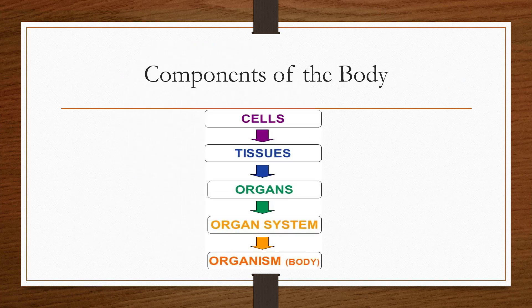Now let's see the different components of the body. Cell is the smallest unit of the human body. Many cells come together to make a tissue. Many tissues come together and form an organ. Many organs come together to form an organ system, and many organ systems make the human body, or an organism.